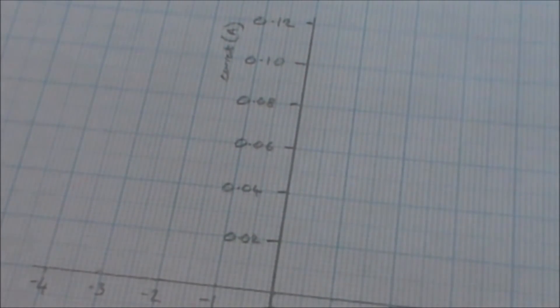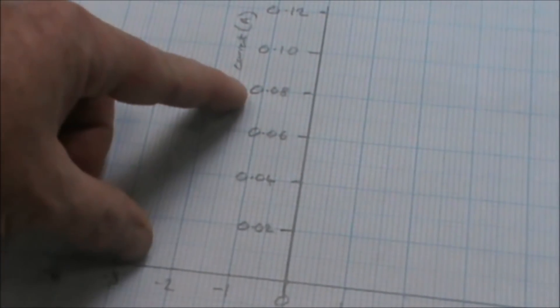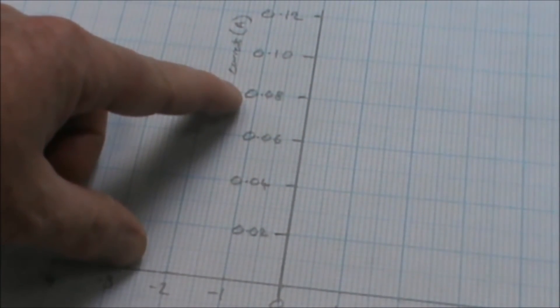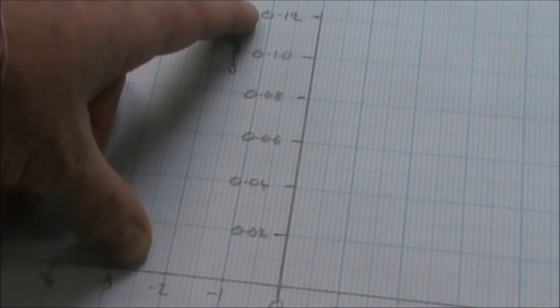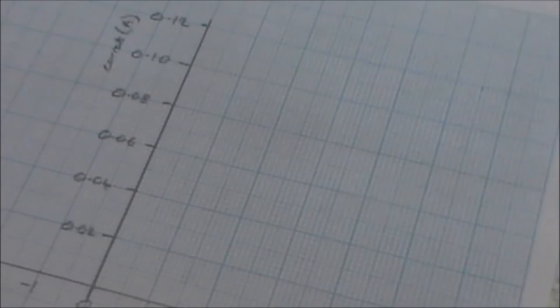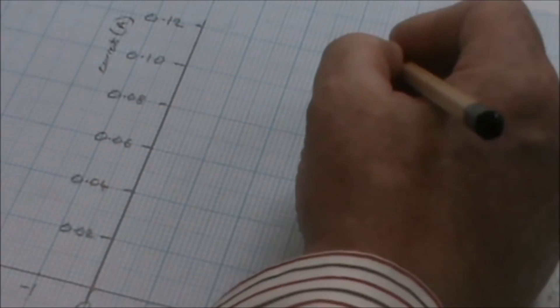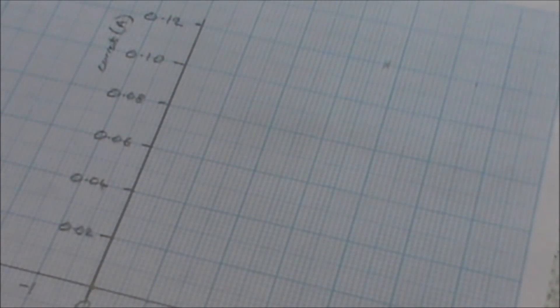Notice on the current I've gone up in 0.02s: 0.02, 0.04, 0.06, 0.08, then it goes to 0.1 and then 0.12. We can now plot our first result which was 3.75 volts and 0.12 amps, and now we can plot the rest of the results.